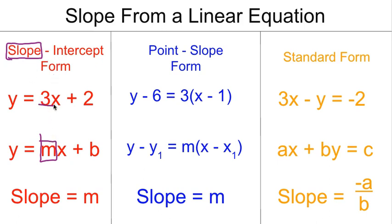So in slope-intercept form, it is as simple as just looking for m, and whatever m is, that is what your slope is.